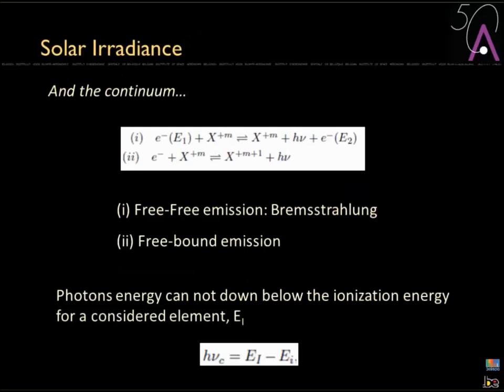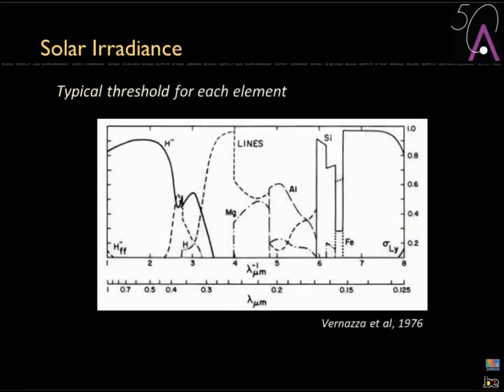I was only talking about emission lines, but there is also the continuum — basically two processes: free-free emission (bremsstrahlung) and free-bound emission. These produce characteristic features in the solar spectrum because photon energy cannot go below the ionization energy boundary for the elements considered. For example, for aluminium, there is an abrupt drop in absorption beyond a certain photon energy — the photon is no longer energetic enough to excite the aluminium, so it becomes completely transparent.